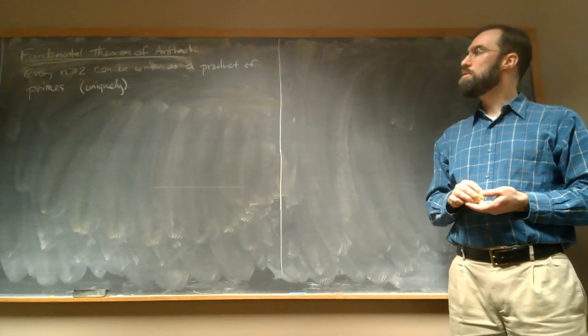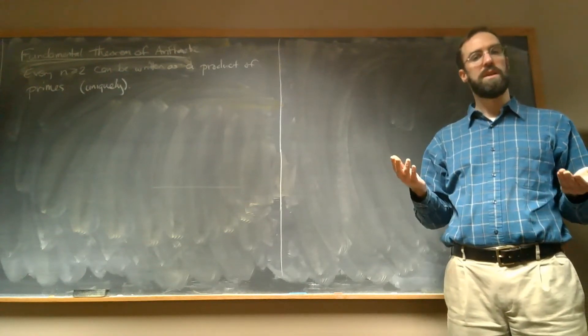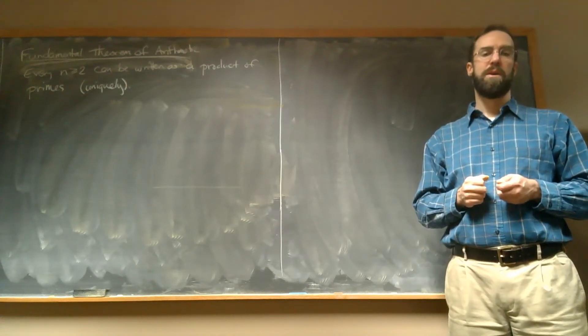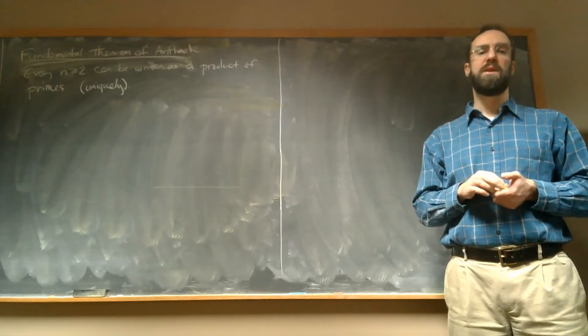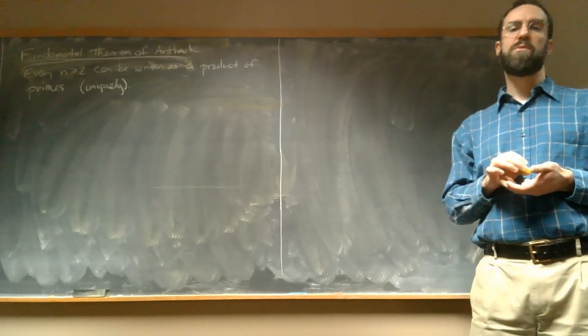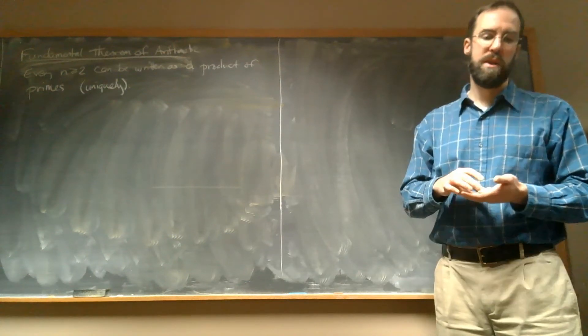But in order to prove the other part of this theorem is that this is even possible, that you can take any number and you can always write it as a product of a bunch of primes, which seems not that hard to prove, but it does actually require proof. And the way to prove this is using induction. So let's see how that proof works.